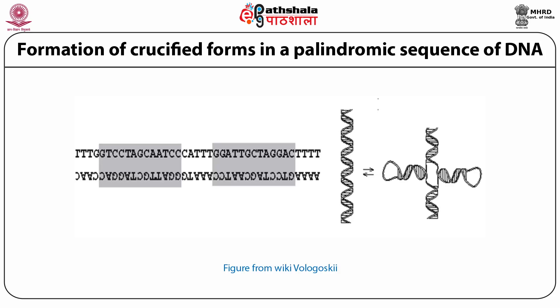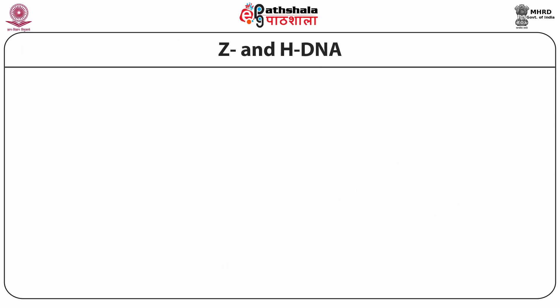We show in this picture the formation of cruciform structures in a palindromic sequence of DNA. A palindromic sequence of DNA is shown, and below on the right-hand side is the cruciform structure formed by the palindromic sequence. There are other deformations as well.